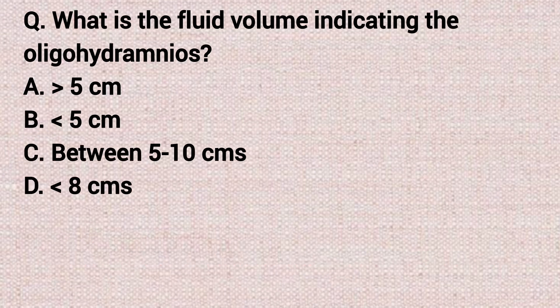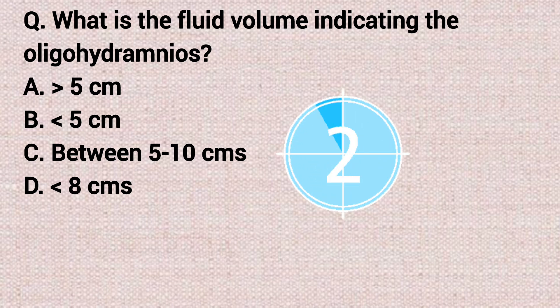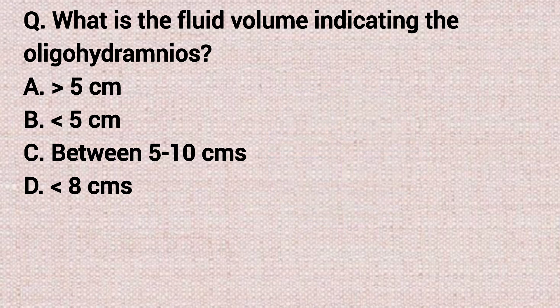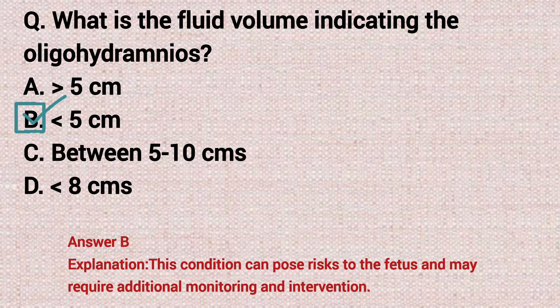The next question: what is the fluid volume indicating oligohydramnios? Option A: more than 5 cm. Option B: less than 5 cm. Option C: between 5 and 10 cm. Option D: less than 8 cm. The correct answer is option B, less than 5 cm.